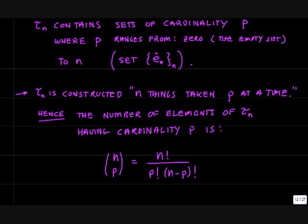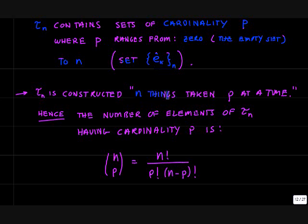The sets that are the elements of τn are sets having some cardinality, call it P, where P ranges from 0 — the cardinality of the empty set is 0 — to n, where you have the complete set of all the basis vectors. So we're going to construct these subsets of the basis by taking things P at a time, talking about combinations of basis vectors. The number of elements for τn having a particular cardinality P is given by the number of combinations of n things taken P at a time — the binomial coefficient.